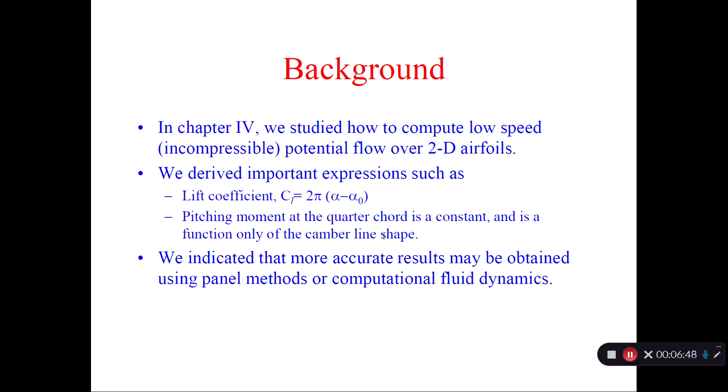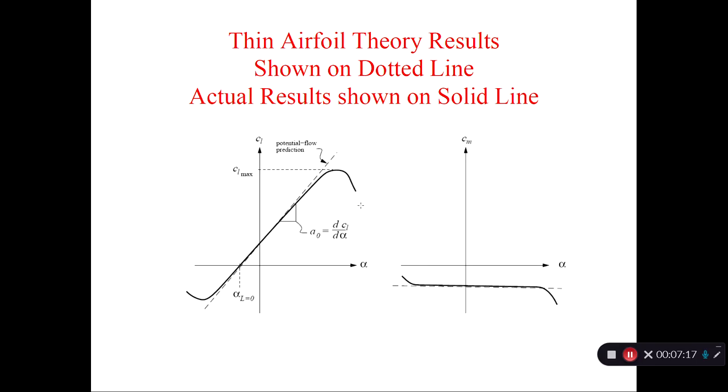And it only depends on the camber line shape. So in our worked out examples in chapter 4, we were dealing with things like A1 and A2 to compute the pitching moment. A1 and A2, if you look back, they are functions of only the slope of the camber line, dz dx. So we can get more accurate solutions from CFD or from panel method, but these principles do not change for 2D.